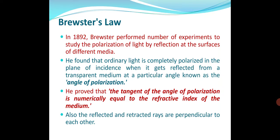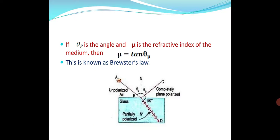This is all defined in Brewster's law. In his experiment, he studied the polarization of light by reflection at the surfaces of different media. He found that ordinary light is completely polarized in the plane of incidence when it gets reflected from a transparent medium at a particular angle known as the angle of polarization. He also proved that the tangent of the angle of polarization is numerically equal to the refractive index of that medium.